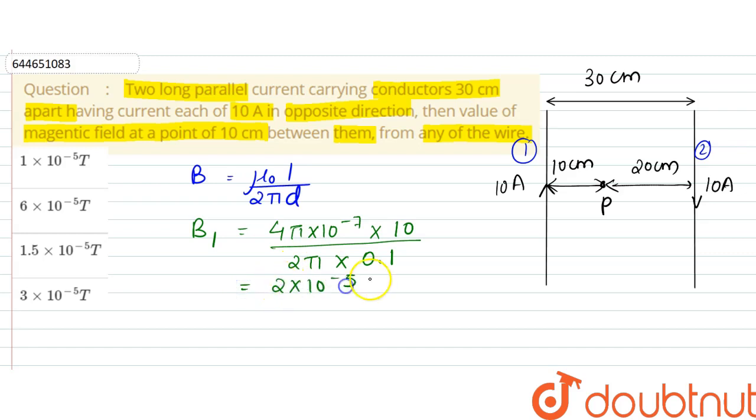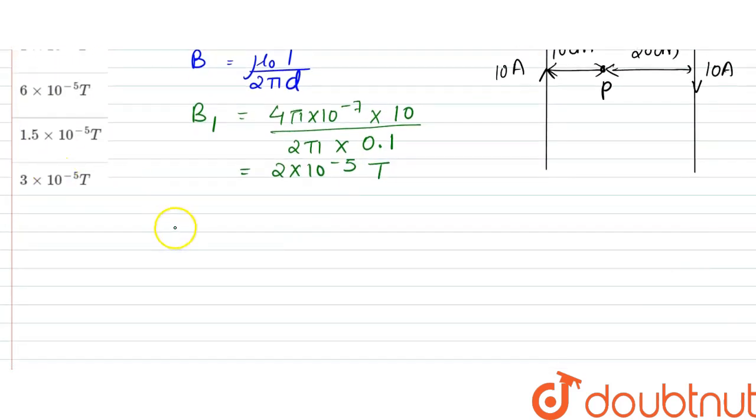And B2, similarly B2 can be found out: 4 pi into 10 to the power minus 7 into 10 divided by 2 pi into 0.2. So this when calculated turns out to be 1 into 10 to the power minus 5 tesla.